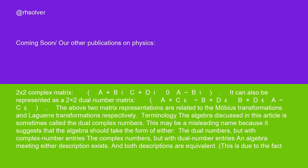It can also be represented as a 2 by 2 dual number matrix: [[A plus C epsilon, minus B plus D epsilon], [B plus D epsilon, A minus C epsilon]].